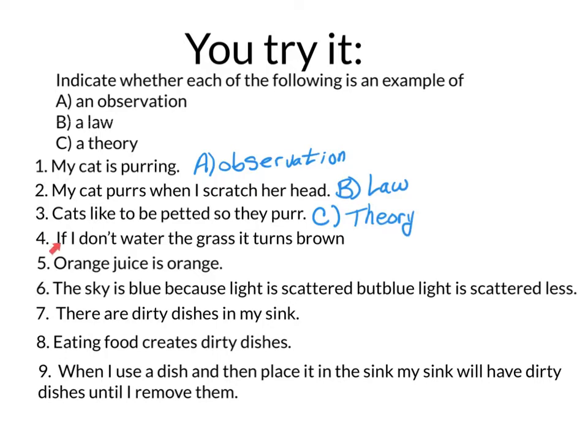Number four. If I don't water the grass, it turns brown. That would be a law. If I don't ever water the grass, it will turn brown. Orange juice is orange. That's an observation. The sky is blue because light is scattered, but the blue light is scattered less. Hmm. That sounds like a theory. I believe that is why it's happening.